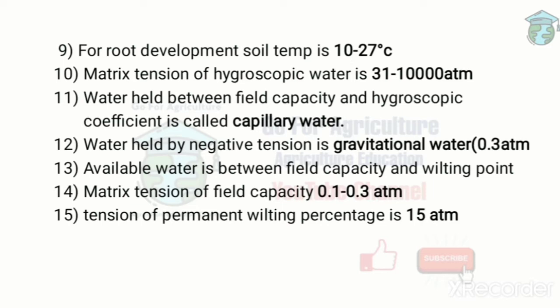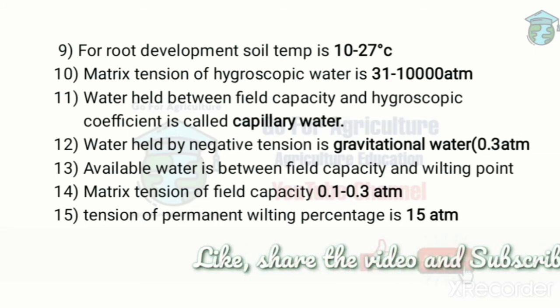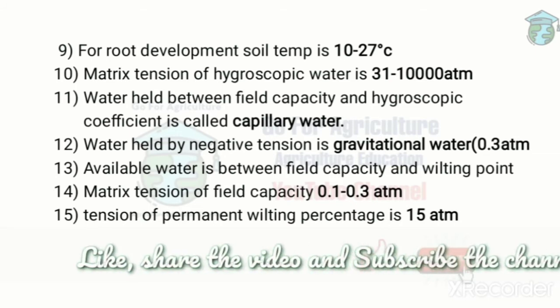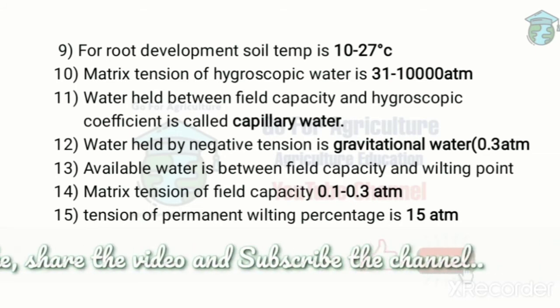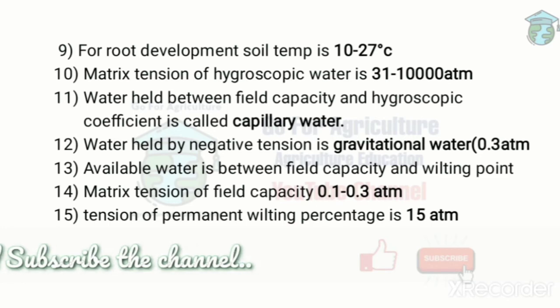For root development, soil temperature should be 10 to 27 degrees Celsius. For optimum crop root development, the temperature should be 15 to 45 degrees Celsius.